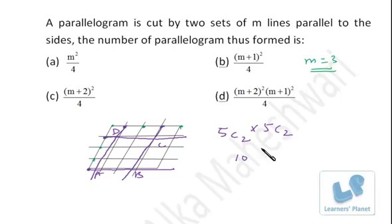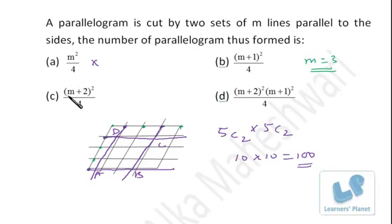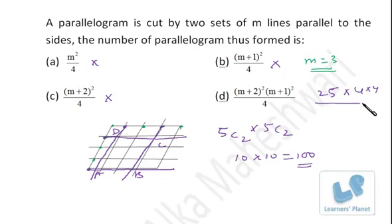5C2 is 10, so 10 times 10 gives 100 parallelograms when M=3. Now substitute M=3 into each option to see which gives 100. Option with (M+2)² gives 5²=25, and (M+1)² gives 4²=16; so 25 times 16 divided by 4 equals 100. That's the correct choice. The answer is (M+2)²(M+1)²/4, confirmed by substituting M=3.